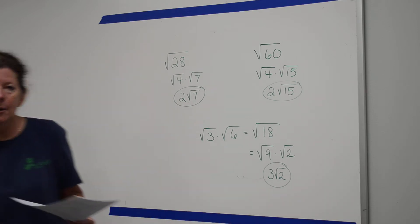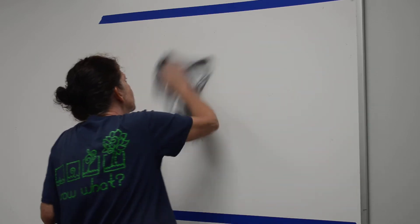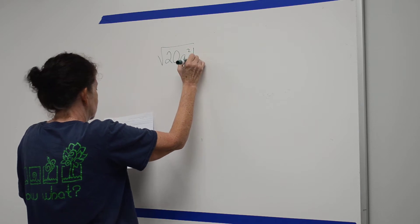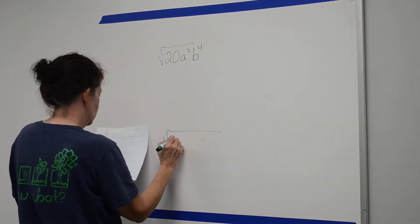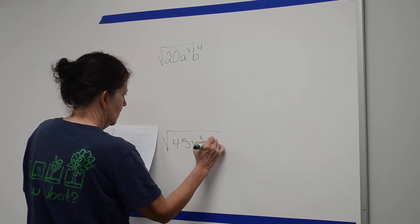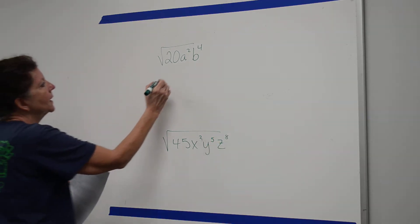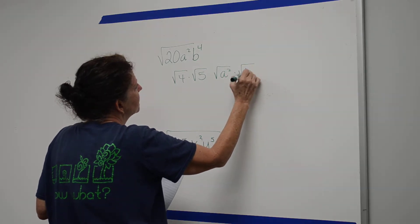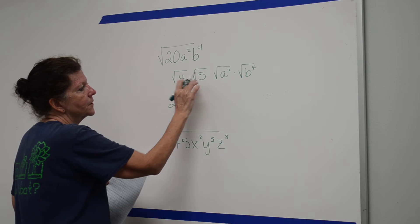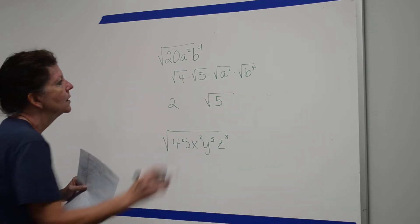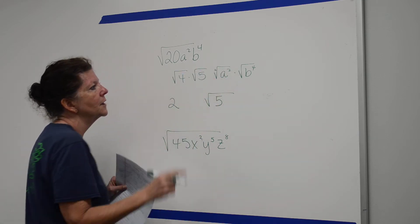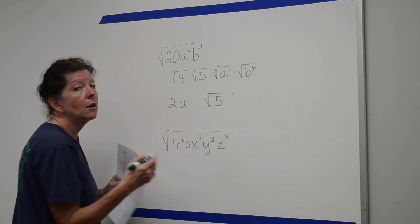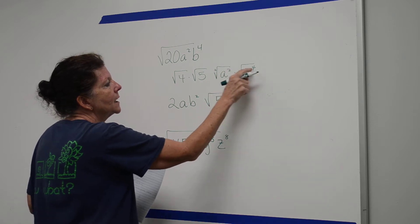Then we added in some variables. On this particular one, I can look at 20 as the square root of 4 times the square root of 5, times the square root of a squared, times the square root of b to the 4th. That gives 2 on the square root of 5. For variables, 2 times 1 equals 2, so I have a to the first power. 2 times 2 equals 4, so I have b squared. Both come out even, so nothing remains underneath the square root.